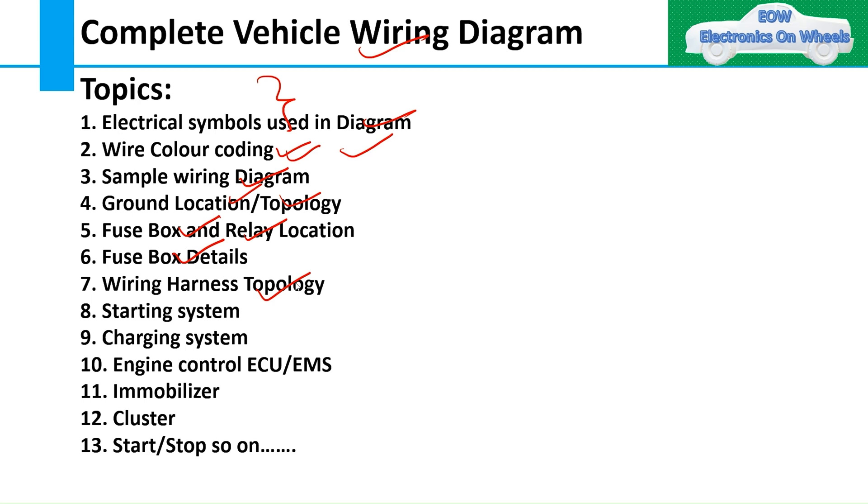Then we'll go to the systems. System-wise, we'll understand what particular components are coming. Starting system - how many components are coming, how they're connected. The example I give might be different for you because you might be working on a different vehicle or different OEM, but the concept will remain the same. You'll have the starting system, some fuses, some relays - those concepts remain the same. Then charging system, engine control system, immobilizer, cluster, start-stop, and many other systems.